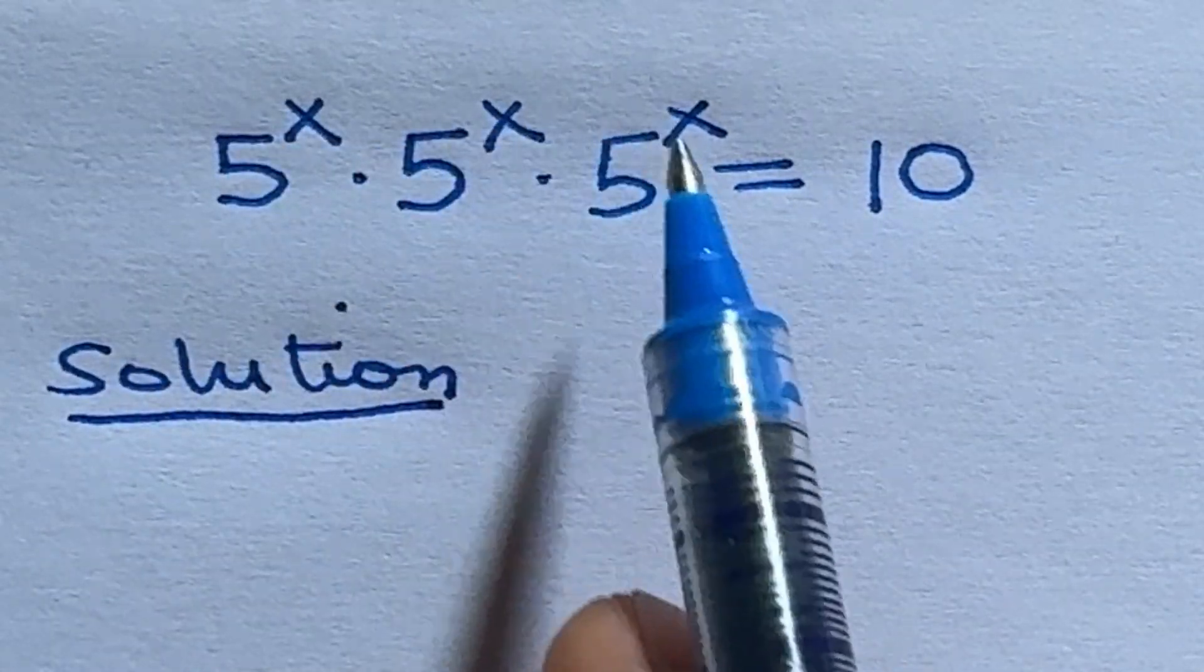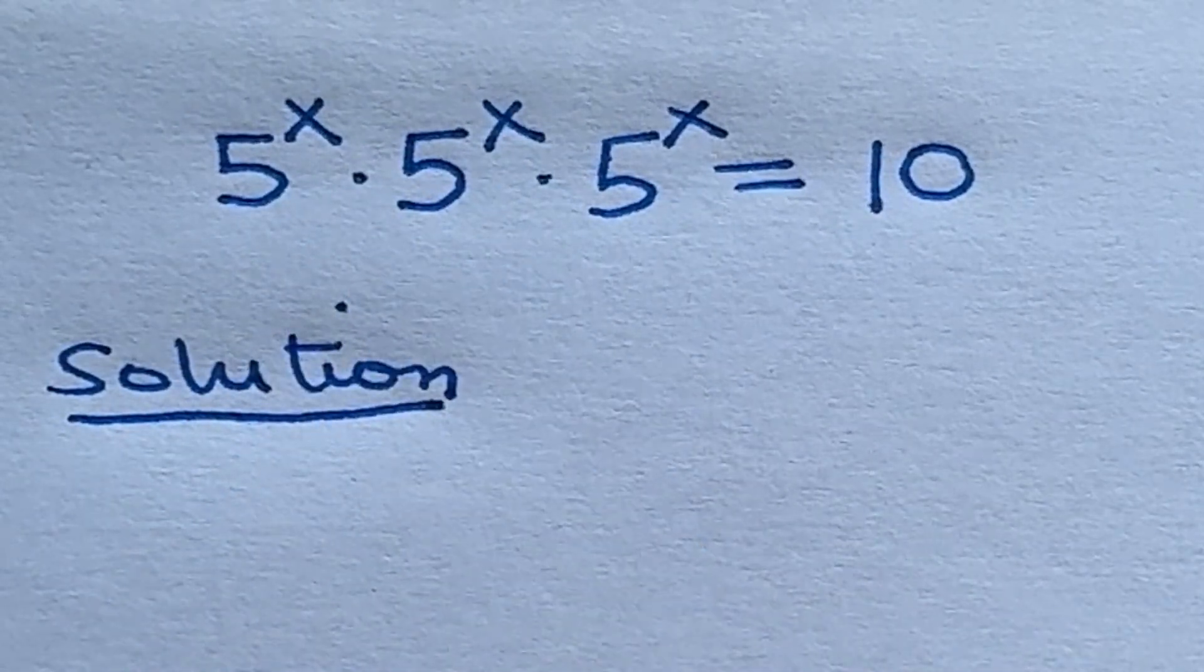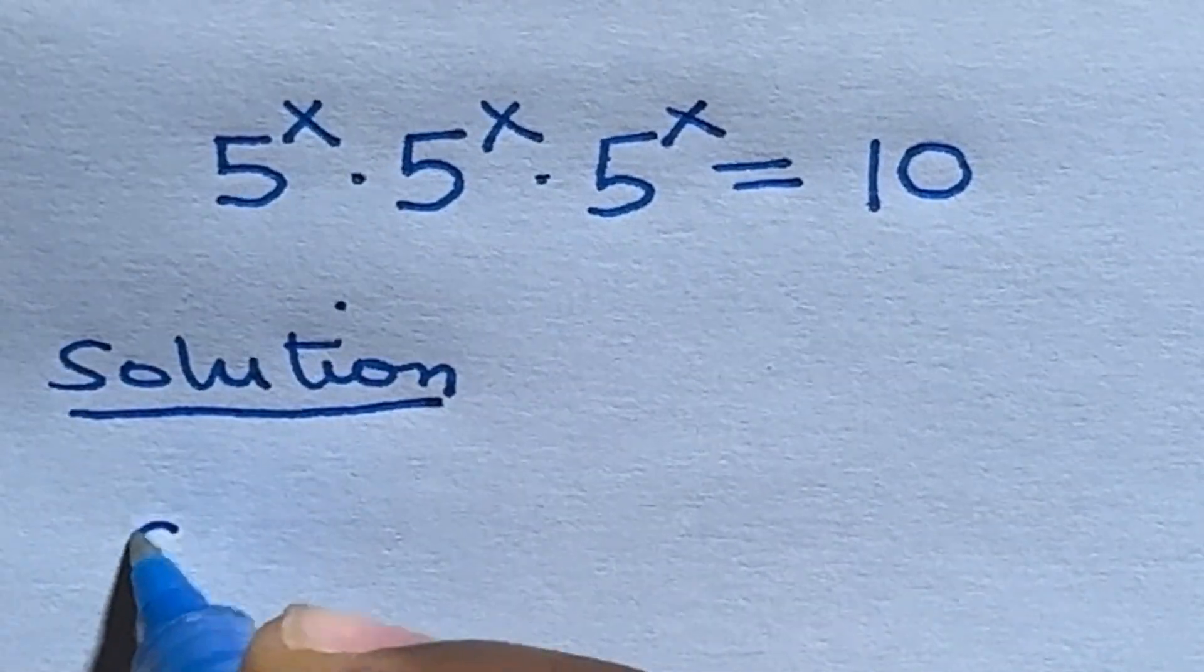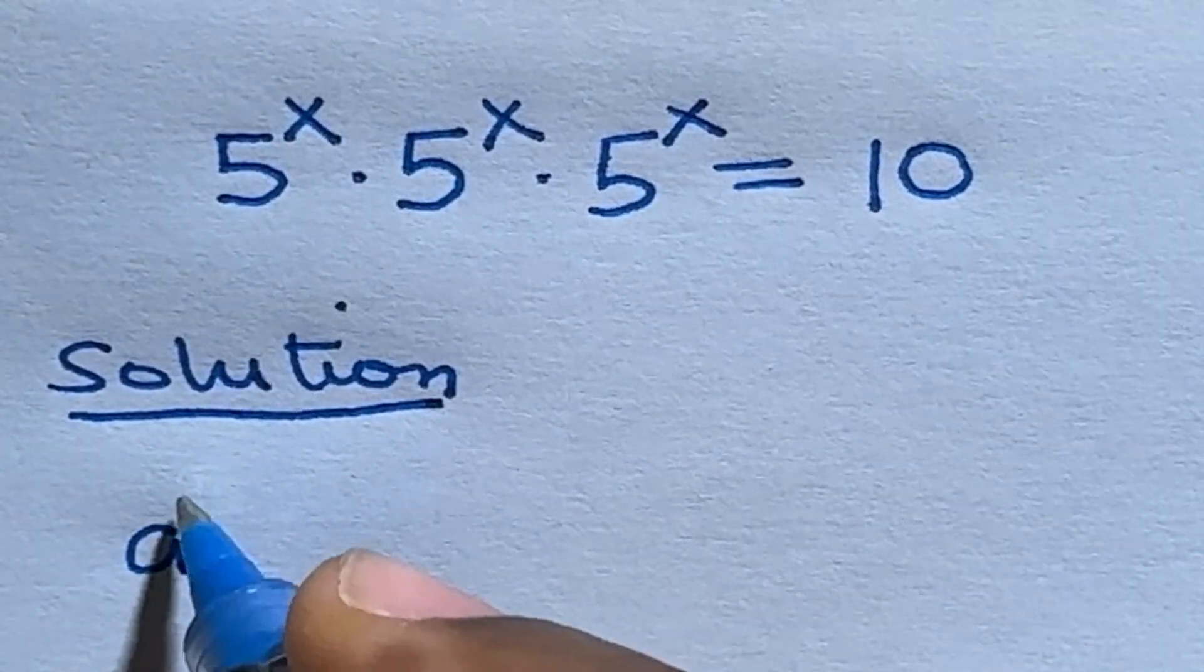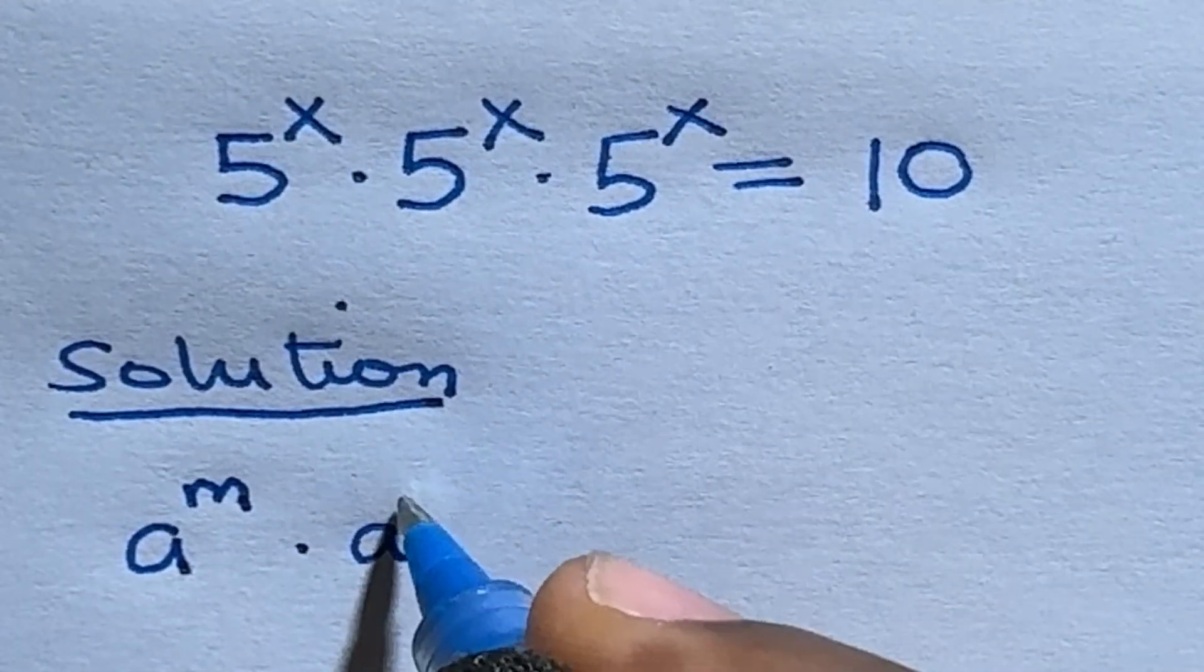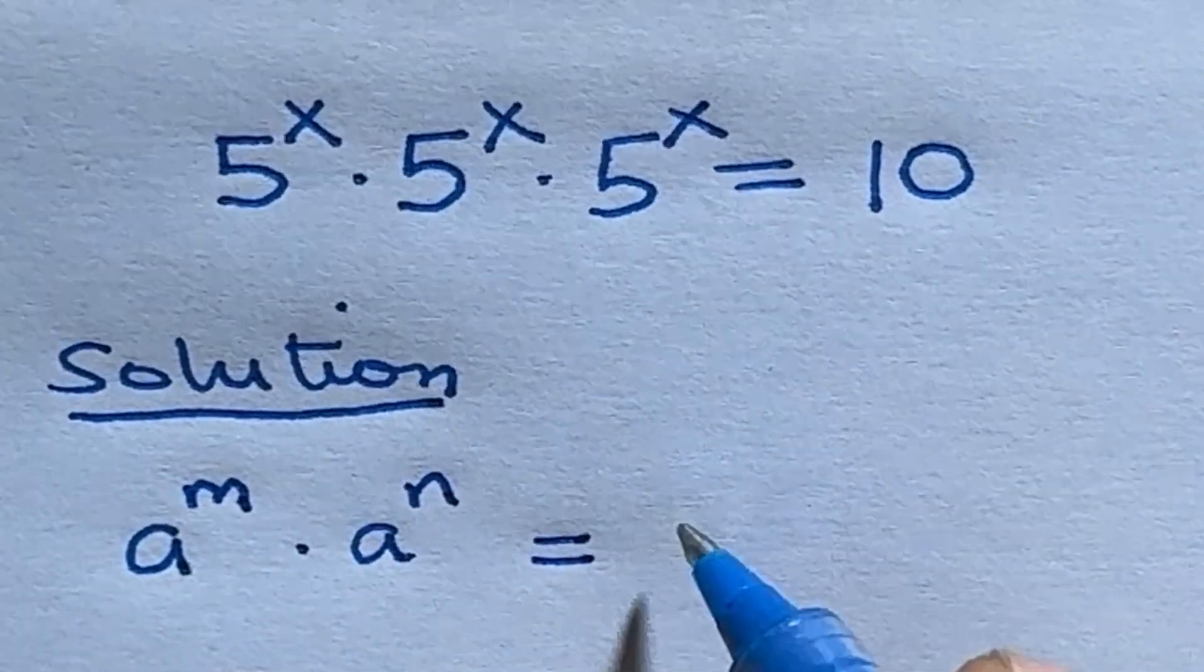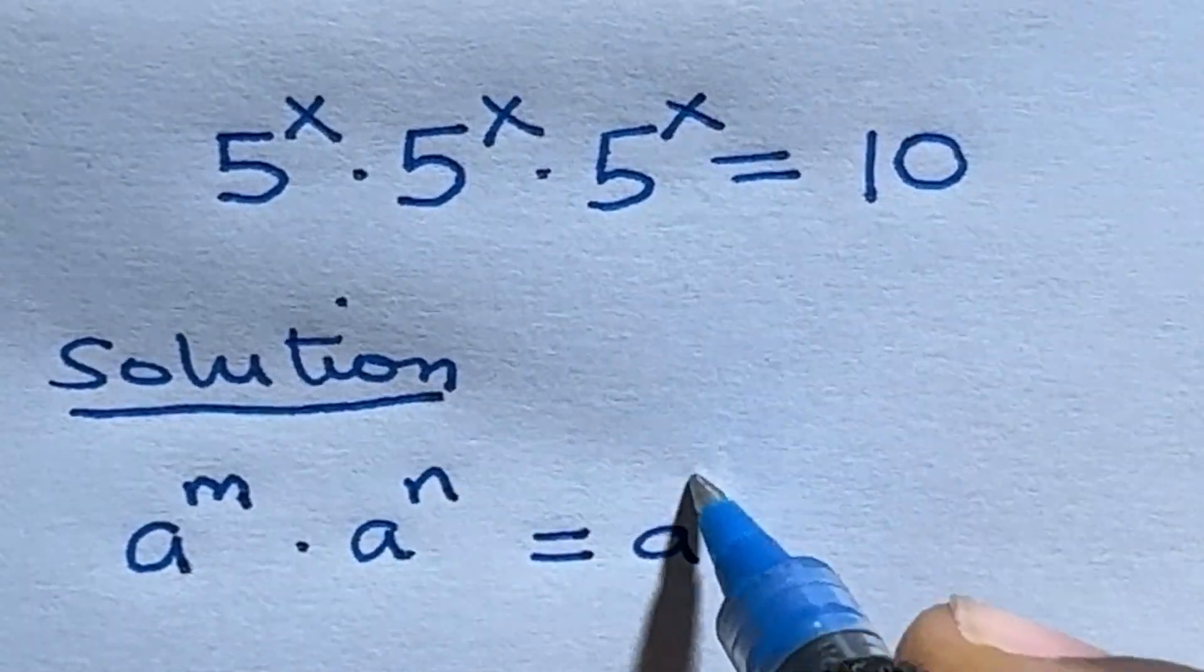The first thing we need to do is apply the law of indices that says if you have the same base in a product of numbers like this, you can simply pick one of the bases and add the powers.